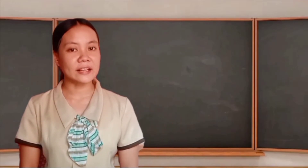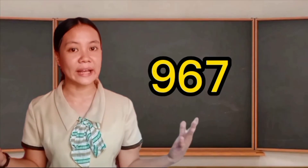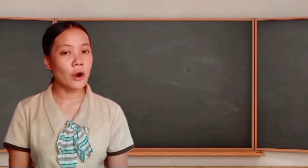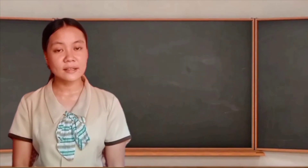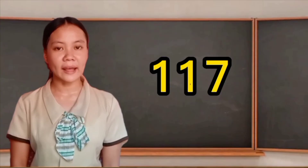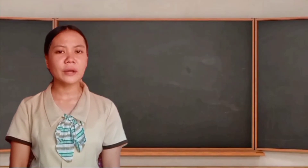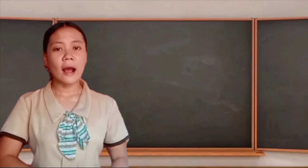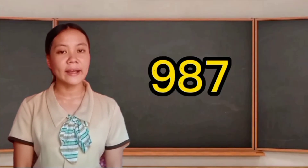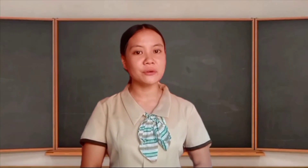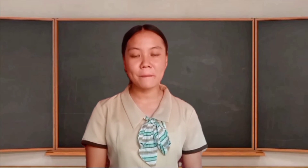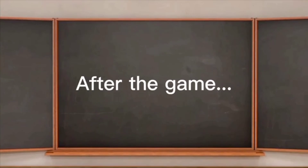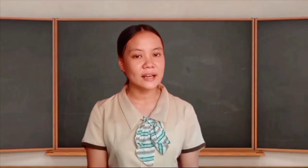First, write the expanded form of 967. Ready, get set, go! Next, write the expanded form of 482. Next, write the expanded form of 565. Next, how can we write the expanded form of 987? Class, it's really nice to see all of you enjoying the group activity and our game. Congratulations to all of you. The group considered as the winner is Group 1.